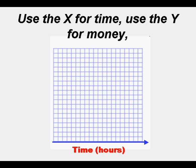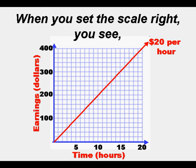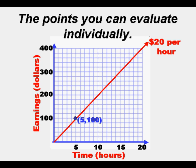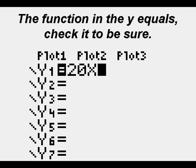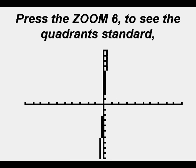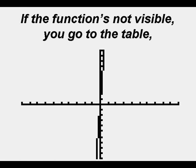Use the X for time, use the Y for money. You can set the scale to 1 or 10 or 20. When you set the scale right, you see the points you can evaluate individually. With the graphic calculator it's even easier — enter the function in the Y equals, check it to be sure. Press zoom 6 to see the standard quadrant, then if you need to, adjust the window.